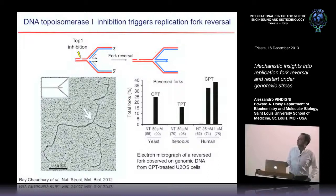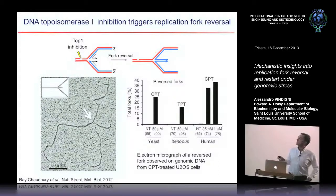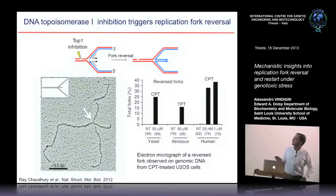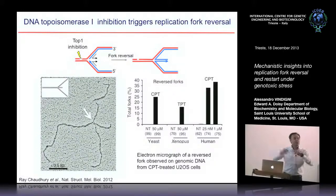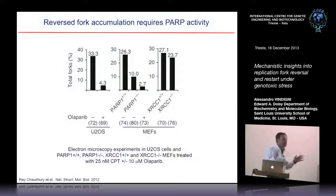This electron micrograph shows an example of a reverse replication fork — these are the two arms of the fork, and this is the reversed arm. He was able to detect a high fraction of these molecules by treating cells with camptothecin, a topoisomerase 1 inhibitor. This is true not only in human cells but also in Xenopus and yeast, so it is conserved across different organisms.